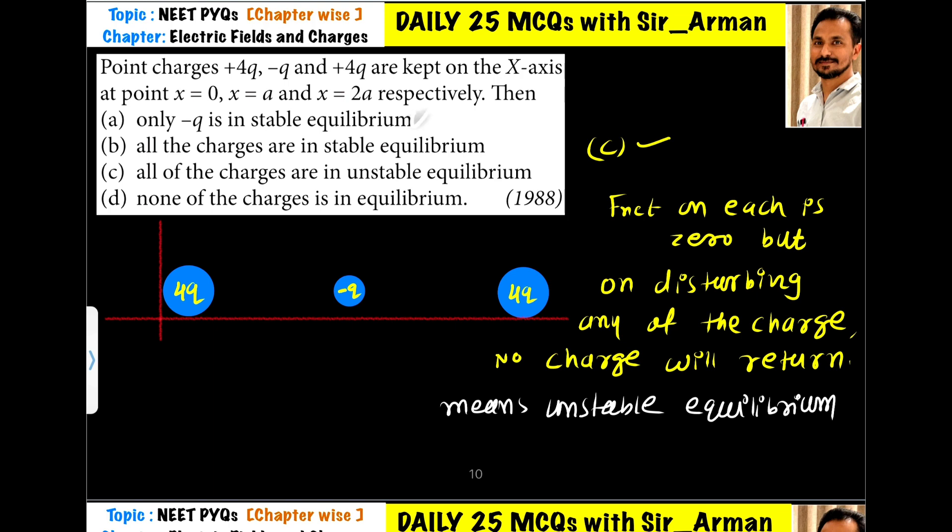This means the system is not in stable equilibrium. Option 1 is incorrect. And I have already discussed in option A that the system is not in stable equilibrium because none of the charges are in stable equilibrium.